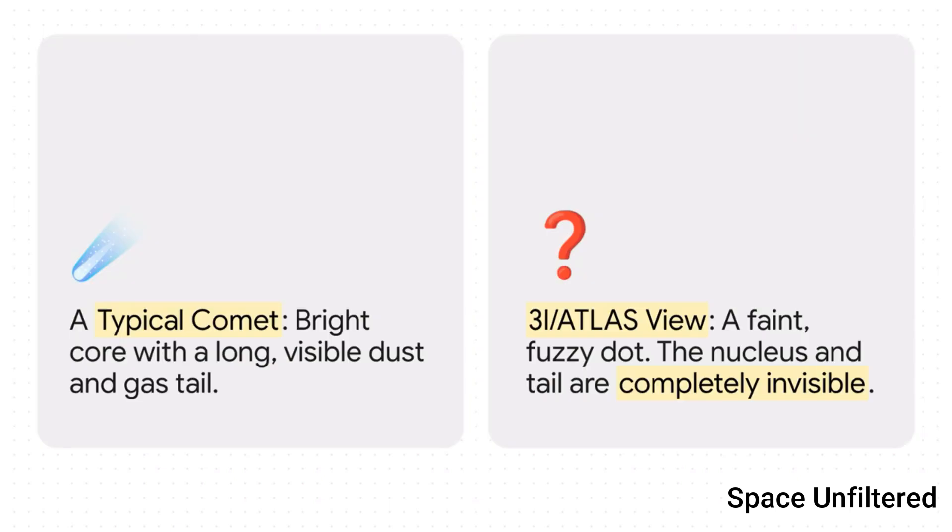So here's the paradox in a nutshell: we expect to see a bright core, the nucleus, with a long brilliant tail. But what the CaSSIS camera actually saw was just this faint fuzzy dot. And that dot isn't even the solid core of the comet, it's the coma—that's the halo of gas and dust around it.